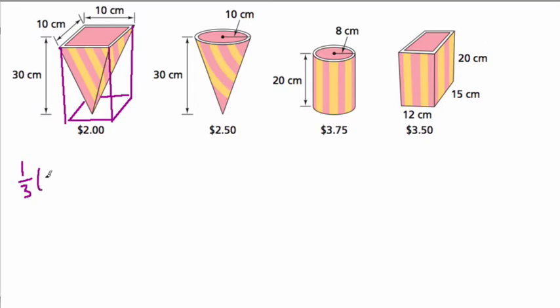So the volume of the square pyramid is one third of that prism. So we're going to take one third of 30 by 10 by 10. I'll leave the units out. I'm going to simplify 30 divided by 3 is 10. So 10 times 10 times 10, and that's 10 times 10 is 100, times 10 is 1,000.